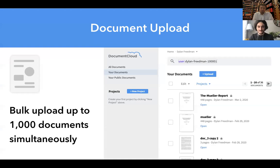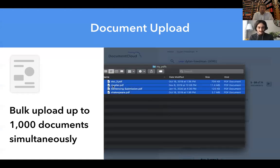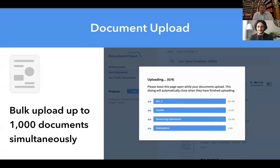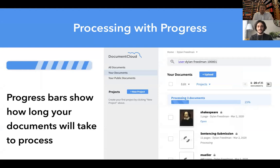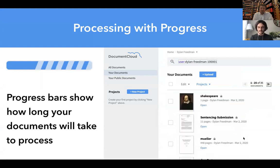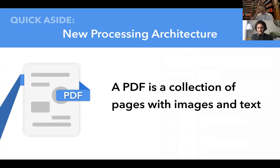So you upload some documents. You can bulk upload up to a thousand documents simultaneously — PDF files. Most people probably only do one or a few at a time, but those power tools exist because some journalists are real power users. Once the documents have been uploaded, they start to process. And this is a really crucial new feature we've added: progress bars. The previous Document Cloud version didn't have progress bars, and you'd have no real way of knowing how long your document would take, which is especially frustrating when it's a really big one.